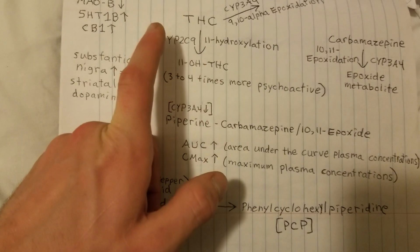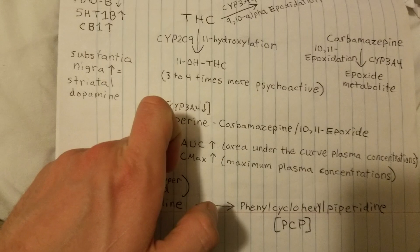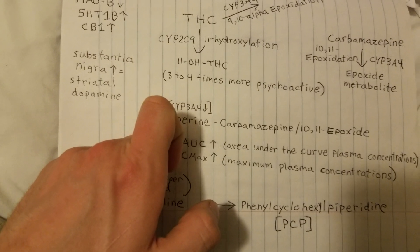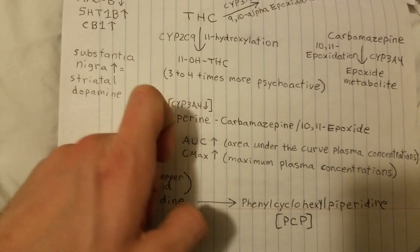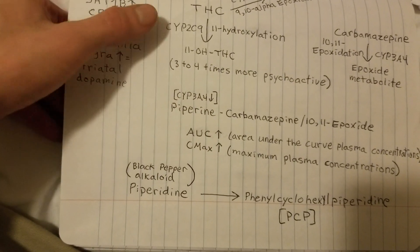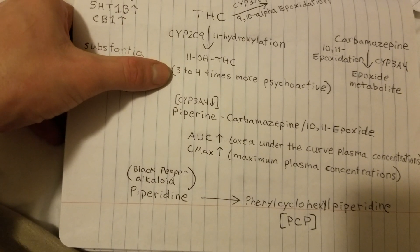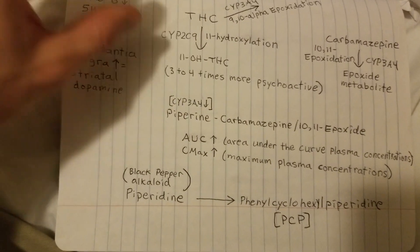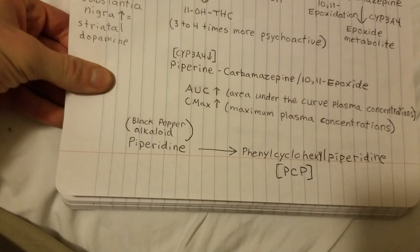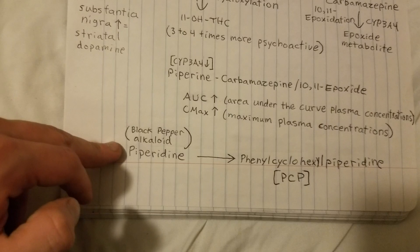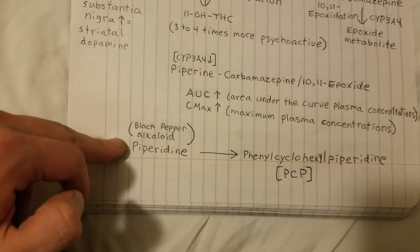For delta-9-THC, which undergoes 11-hydroxylation by a different enzyme, this creates a metabolite three to four times more psychoactive than regular delta-9-THC. The 11-hydroxylation metabolite is more prevalent with edibles, so if you're eating edibles you're more likely to have this metabolite from more extensive metabolism by the liver.